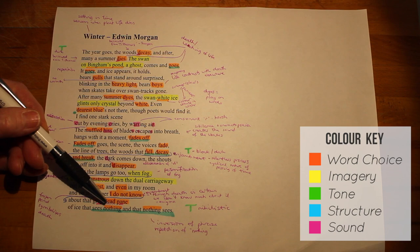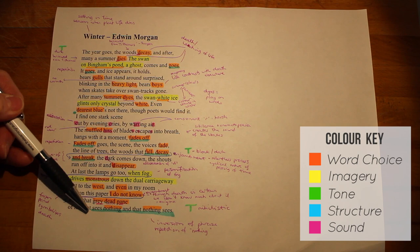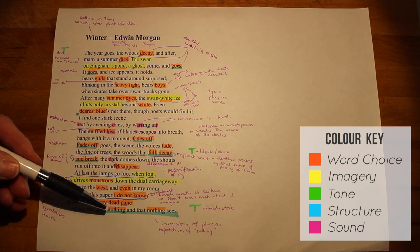And then there's the image of a pane of ice, which is like glass. And yet we expect to see through glass. And here we're told that sees nothing and that nothing sees. The inversion here of the phrase 'sees nothing' and 'nothing sees' helps to emphasize the nihilistic tone at the end of this poem. The repetition of the word nothing also emphasises the cold reality that death is inevitable and final.